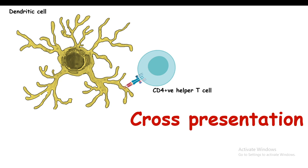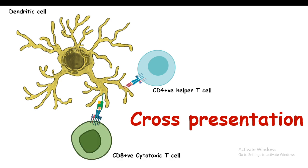This is the normal method of presentation of exogenous antigen by the dendritic cell. But under certain circumstances, there is a different way of presentation in which the dendritic cell presents its antigen on a class 1 MHC molecule, and rather than presenting it to a CD4 positive helper cell, it is presenting it to a CD8 positive cytotoxic T cell. We'll discuss the mechanism and consequences.